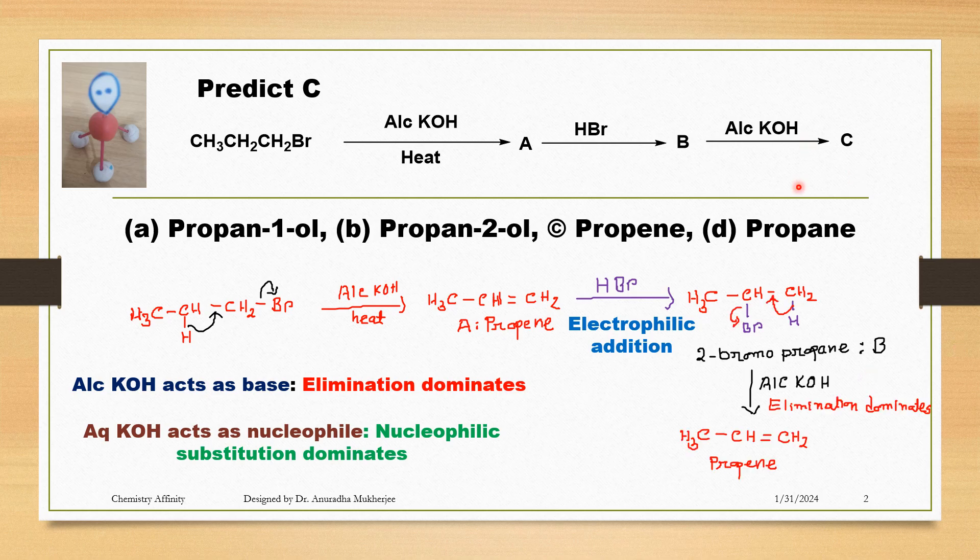Now compound B is treated with alcoholic KOH. Though we are not supplying heat here, still elimination reaction will take place. Because alcoholic KOH acts as a strong base, and whenever any nucleophile acts as a base, elimination reaction dominates over nucleophilic substitution. That means here elimination reaction takes place and we are getting propene.